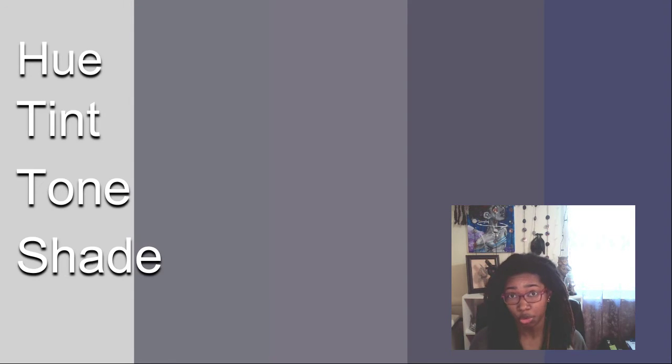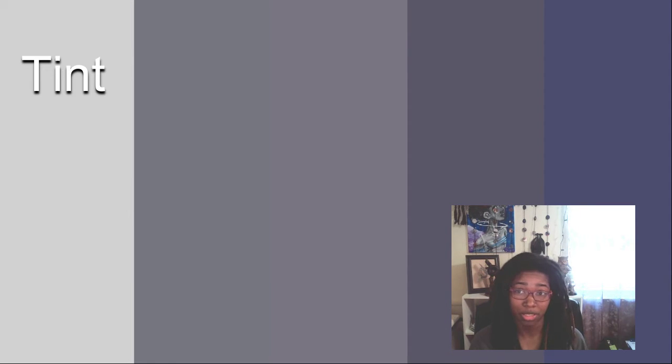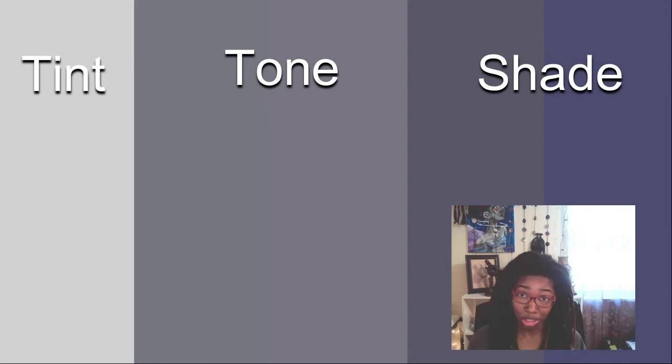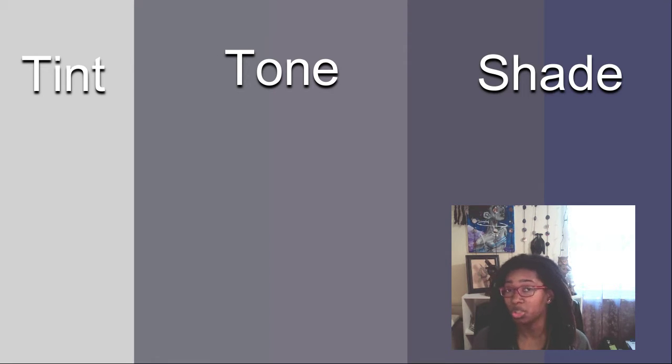Before we dive too far into the swimming pool of all the beautiful colors of the world, we'll go over some quick vocabulary. Not that you necessarily need to know these terms by heart, but I will be using them to describe how colors relate to each other. Our first term is hue, which is just the color itself. I'm also going to be discussing tint, tone, and shade. A tint is a hue that has been mixed with white, a tone is a hue mixed with gray, and a shade is a hue mixed with black.